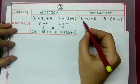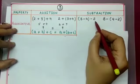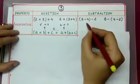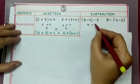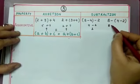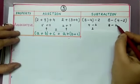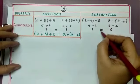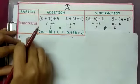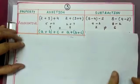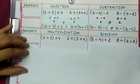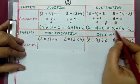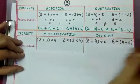Let us check associativity under subtraction: (8 minus 4) minus 2 versus 8 minus (4 minus 2). The first gives 4 minus 2 equals 2; the second gives 8 minus 2 equals 6. Since 2 is not equal to 6, integers are not associative under subtraction. In general, for any three integers a, b, and c, (a minus b) minus c is not equal to a minus (b minus c).